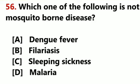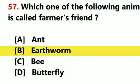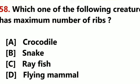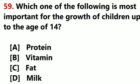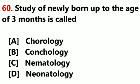Which one of the following is not a mosquito-borne disease? Sleeping sickness. Which one of the following animals is called farmer's friend? Earthworm. Which one of the following creatures has the maximum number of ribs? Snake. Which one of the following is most important for the growth of children up to the age of 14? Protein. Study of newborns up to the age of 3 months is called Neonatology.